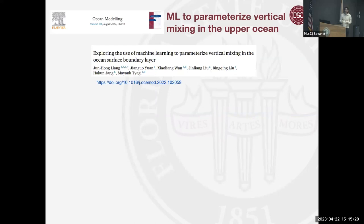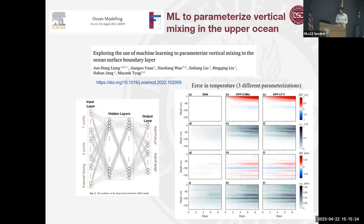In this field we have a proposal to continue the work from John Han Yang on a parameterization related to vertical mixing in the upper ocean, which is very important. We want to implement it in an operational ocean model. The approach is: run a high-resolution model that solves vertical mixing in a small location, then use the output to train a neural network that learns this parameterization. The neural network can then be applied in different areas. The first column shows temperature error through the machine learning-learned parameterization; the second and third columns show temperature errors from classical vertical mixing parameterizations.